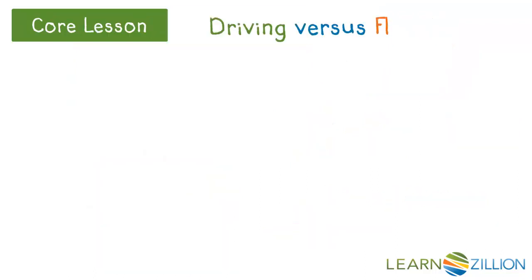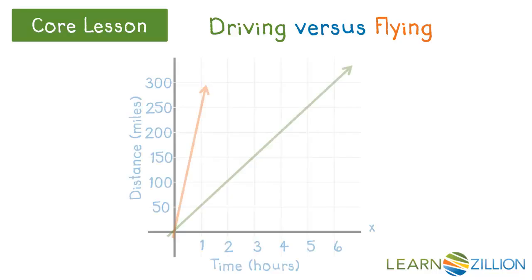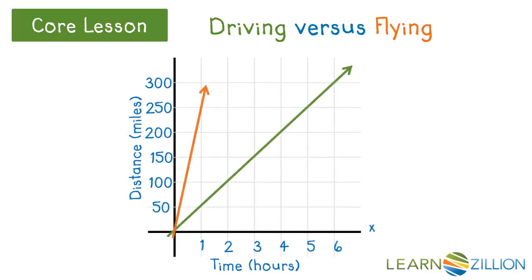When both lines are plotted on the same graph, it's much easier to compare the slopes and see that flying is a lot faster. Rate of change can be fast up, like 250 miles per hour, or slow up, like 50 miles per hour.